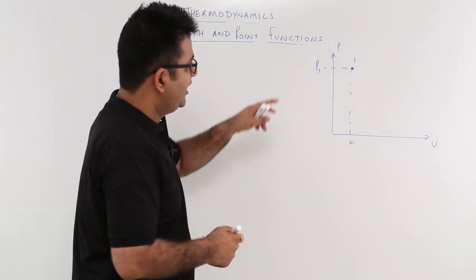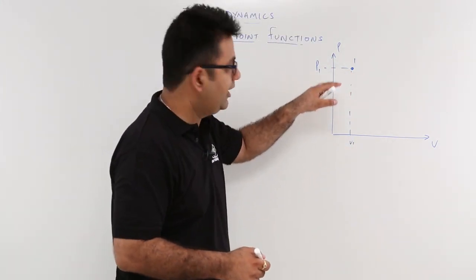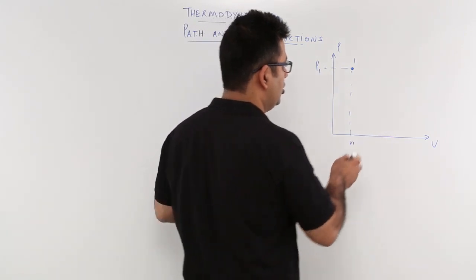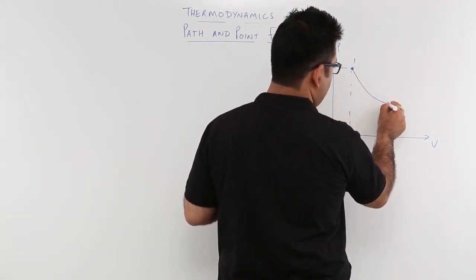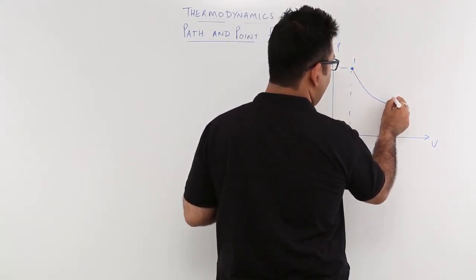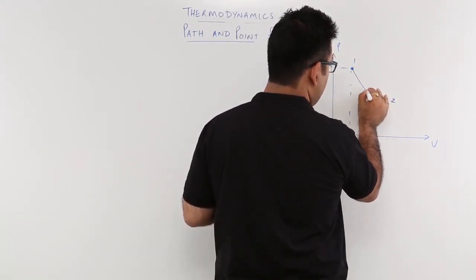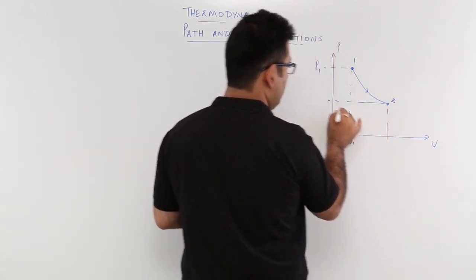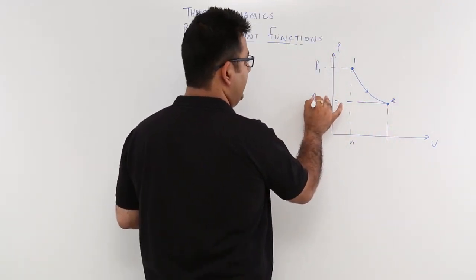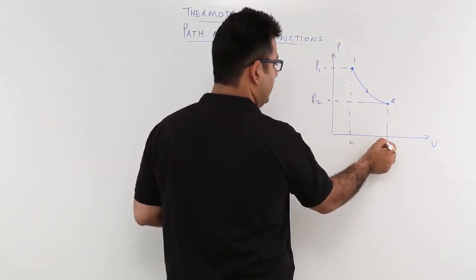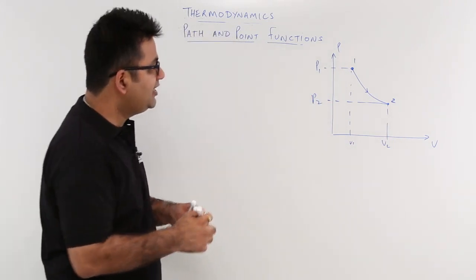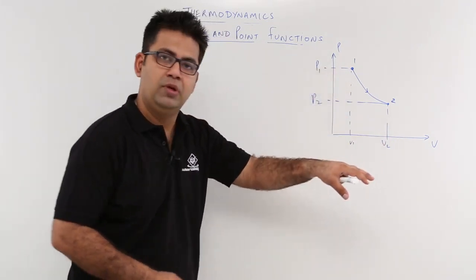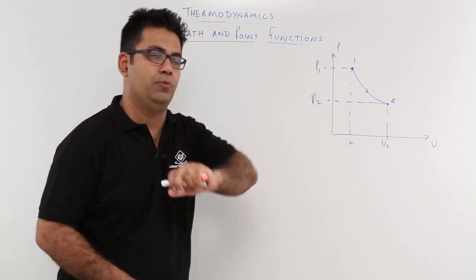Now let us change the state and let us have a process — any random one. So you have P2 and V2, and your state changes from 1 to 2. We have a process 1 to 2.